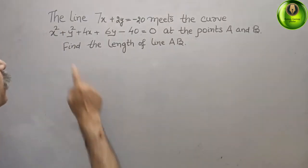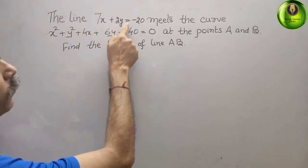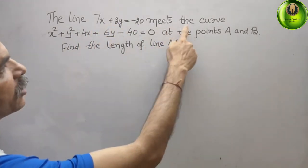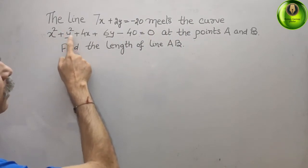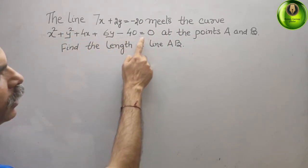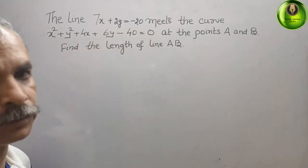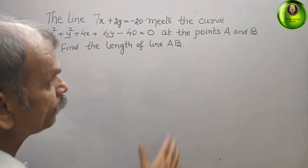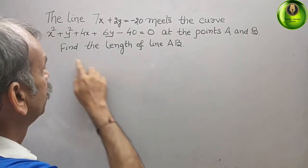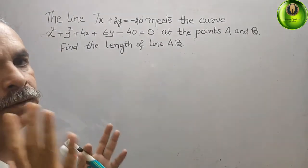Your question is: the line 7x plus 2y equals minus 20 meets the curve x squared plus y squared plus 4x plus 6y minus 40 equals 0 at the points A and B. Find the length of the line AB.